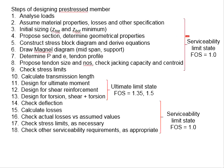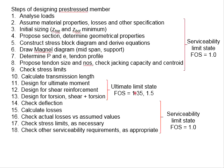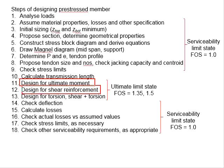After the serviceability limit state, you need to check for the ultimate limit state. The factor of safety will be 1.35 for G_K and 1.5 for Q_K. You need to check and design for the ultimate moment, check and design for shear reinforcement, as well as the torsional resistance.